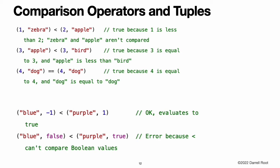However, when the tuples' first elements are the same, their second elements are compared. Tuples can be compared with a given operator only if the operator can be applied to each value in the respective tuple. For example, you can compare two tuples of type (String, Int) because both String and Int values can be compared using the less than operator. In contrast, two tuples of type (String, Bool) cannot be compared with the less than operator because the less than operator cannot be applied to Bool values. The Swift Standard Library includes tuple comparison operators for tuples with fewer than seven elements. To compare tuples with seven or more elements, you must implement the comparison operators yourself.